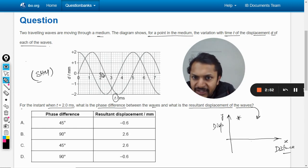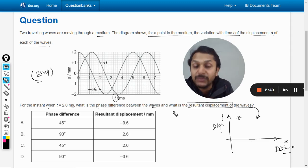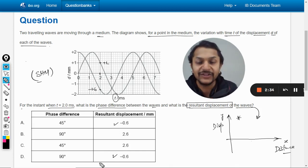Either the amplitudes are added or subtracted. Similarly here, at 2 milliseconds what is happening? At this point the displacement is plus 1, but at this point the displacement is minus 1.6. Now we want to find the resultant displacement. What does it mean? You just add these two.